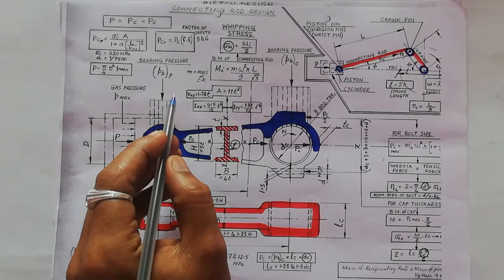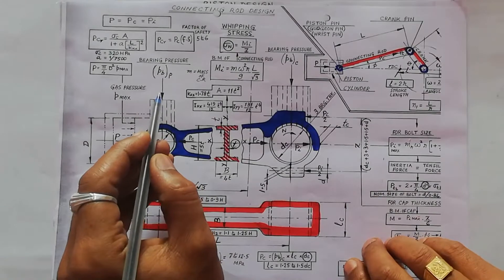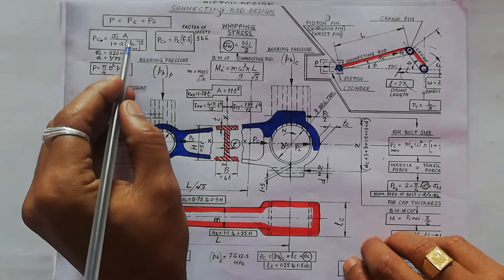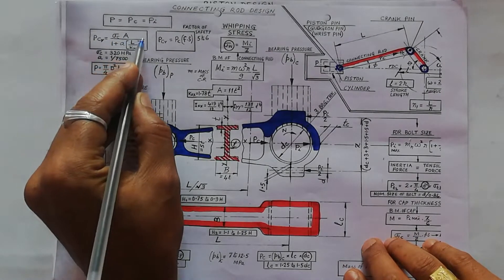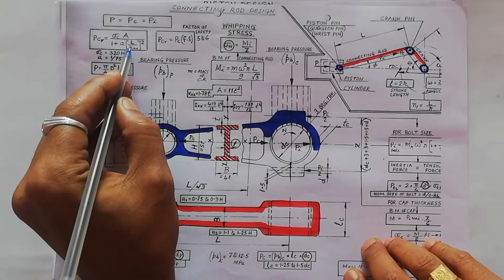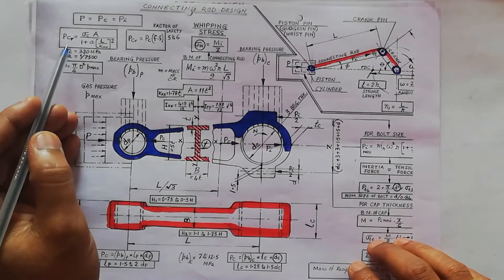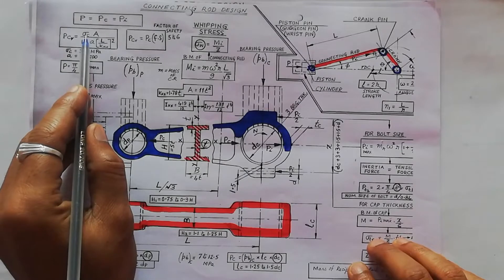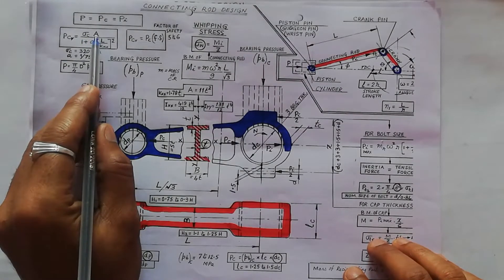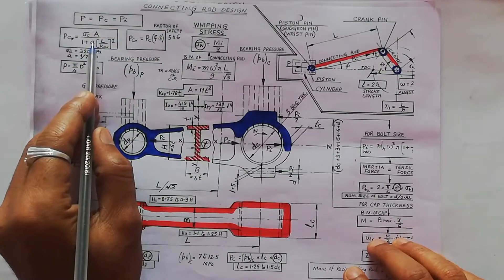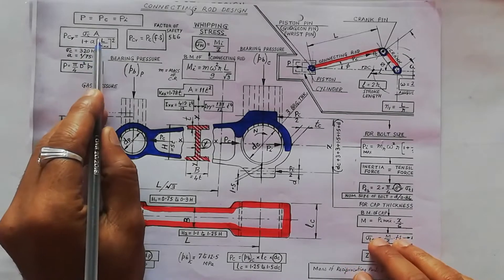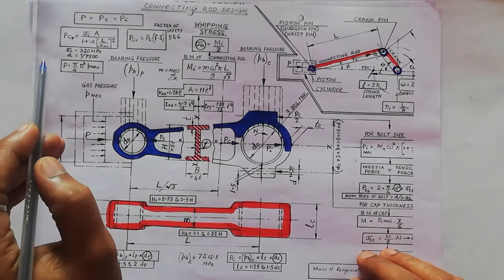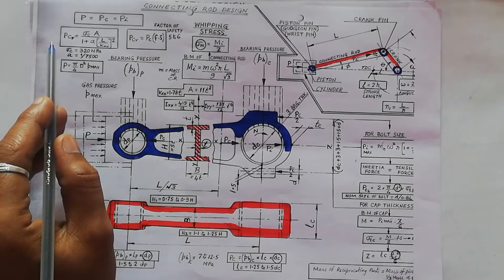Once the radius of gyration is calculated, you apply it in the Rankine formula, also called the buckling load formula. The formula is: buckling load equals sigma_c times A divided by 1 plus a times (L divided by k_x) squared. Here, sigma_c is the compressive yield stress, A is the cross-sectional area, and the constant a equals 1 divided by 7500. L is the length of the connecting rod and k_x is the radius of gyration in the x-axis. Substitute all given values into this formula.